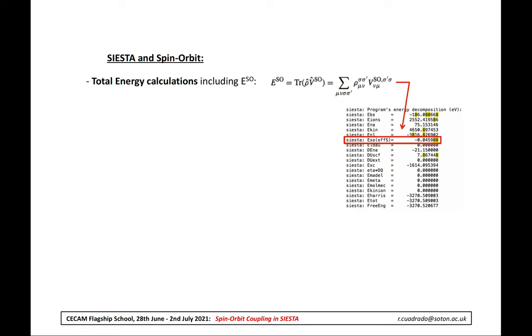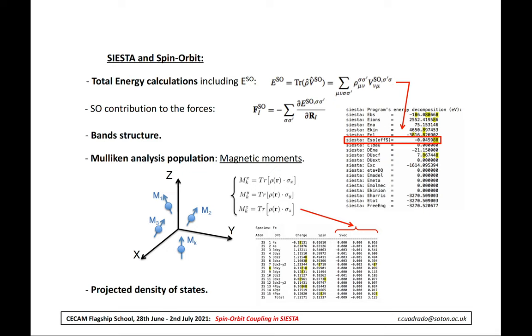Finally, I want to highlight that SIESTA will give you in its output slightly different information if you include the spin-orbit, as you can see on the right where the total energy has been separated in several contributions and also you can see here the contribution of the spin-orbit coupling to the total energy. Also it is possible to obtain the band structure, perform optimizations, you can obtain a Mulliken analysis of population and calculate the magnetic moments, and also the charge per orbital or per atom, and also you can calculate and obtain the projected density of states.